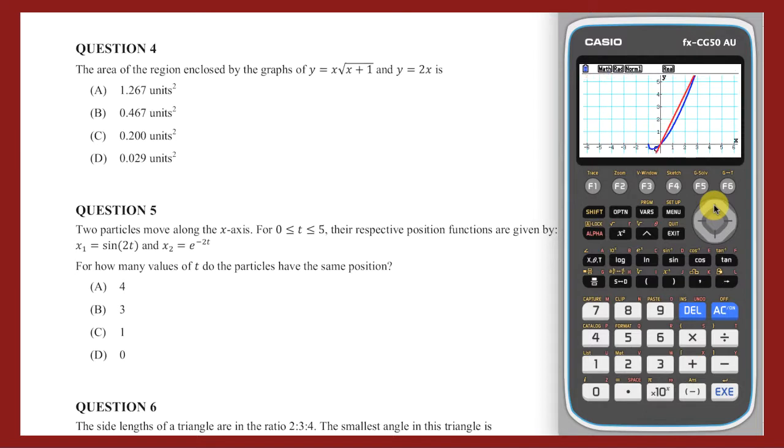The area of the region enclosed by these two functions can be calculated using the G-solve menu. Press F5 to open this menu, press F6 to see more options, press F3 to see the definite integral options, and press F3 again to calculate the definite integral using the intersection point of the two functions. The left-most intersection has been found. Press Execute to select it as the lower bound of the definite integral.